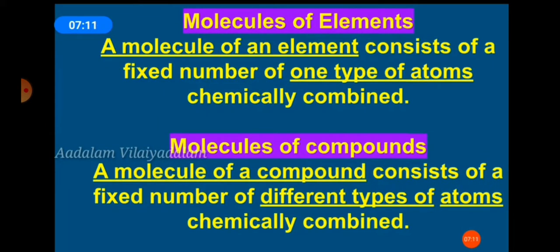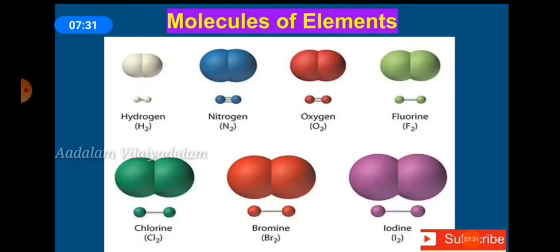Now, molecules of elements and molecules of compounds. A molecule of an element consists of a fixed number of one type of atom chemically combined. Examples of molecules of elements: hydrogen, nitrogen, oxygen, fluorine, chlorine, bromine, and iodine — these consist of a fixed number of the same kind of atoms.